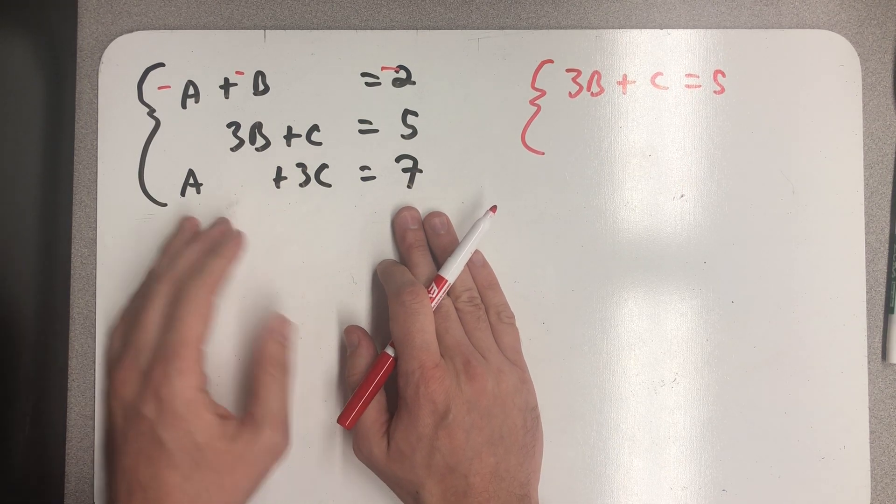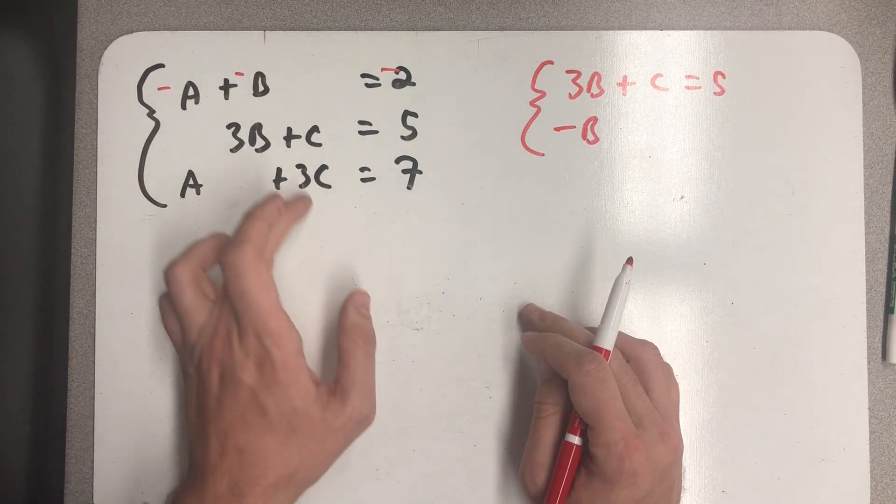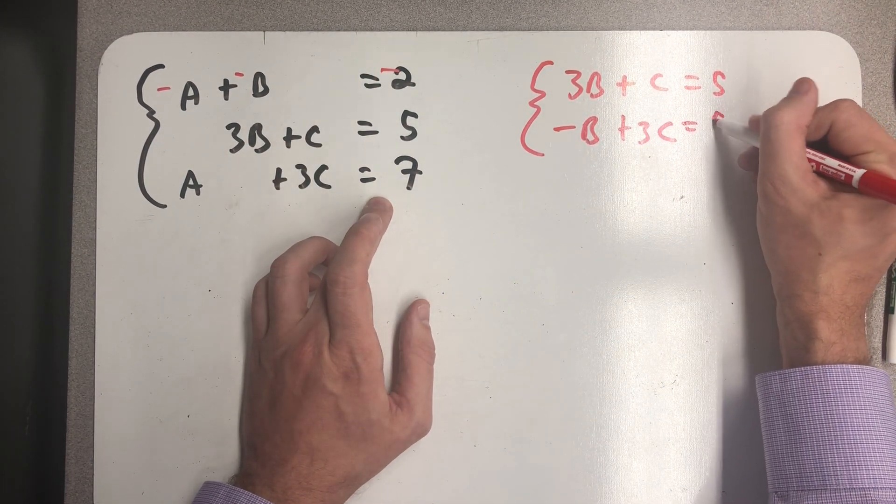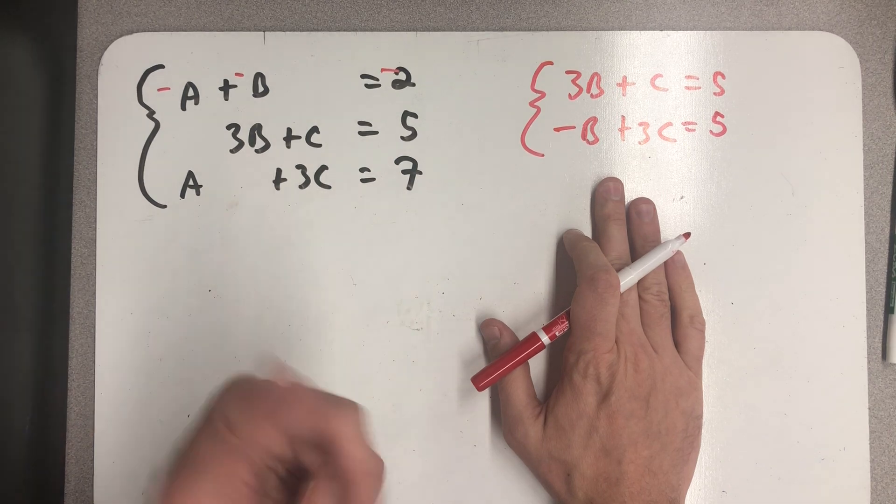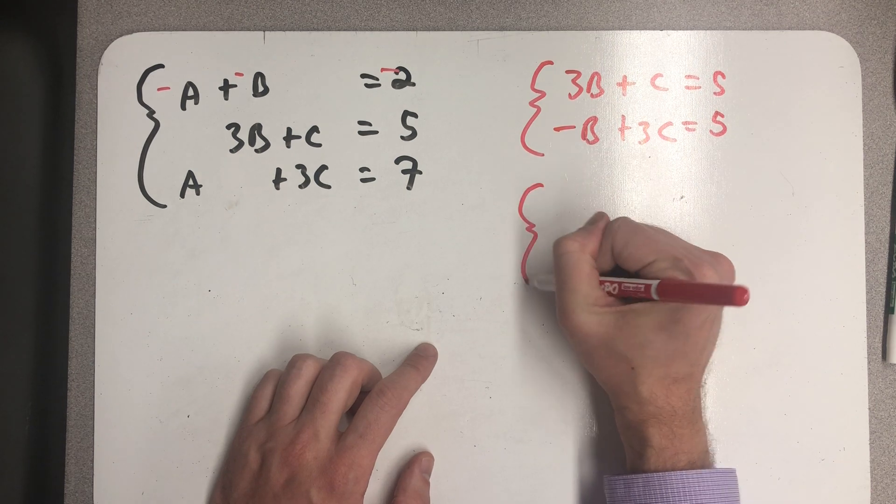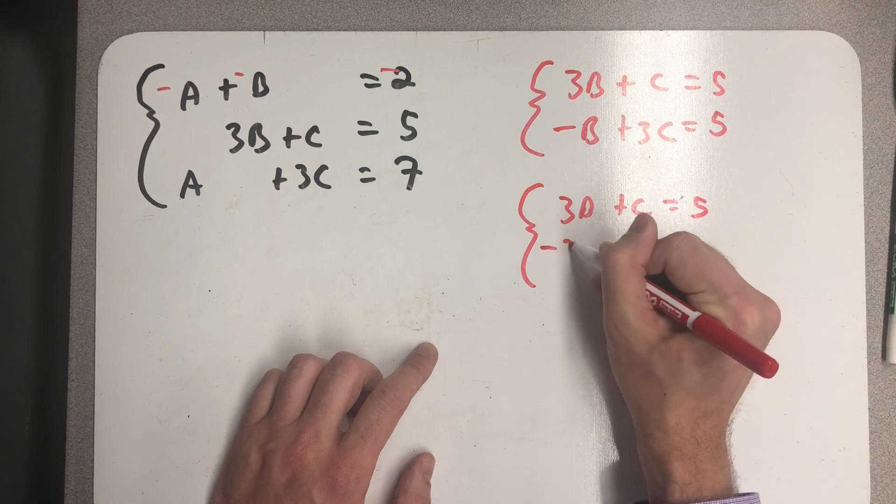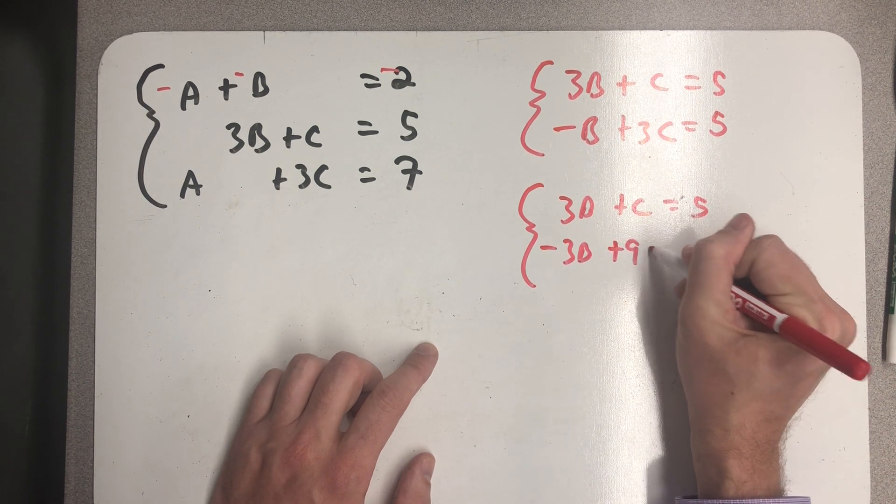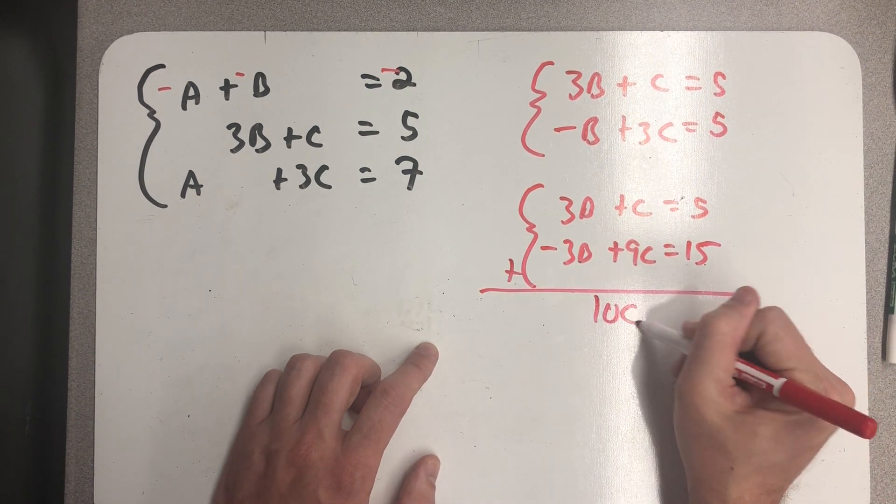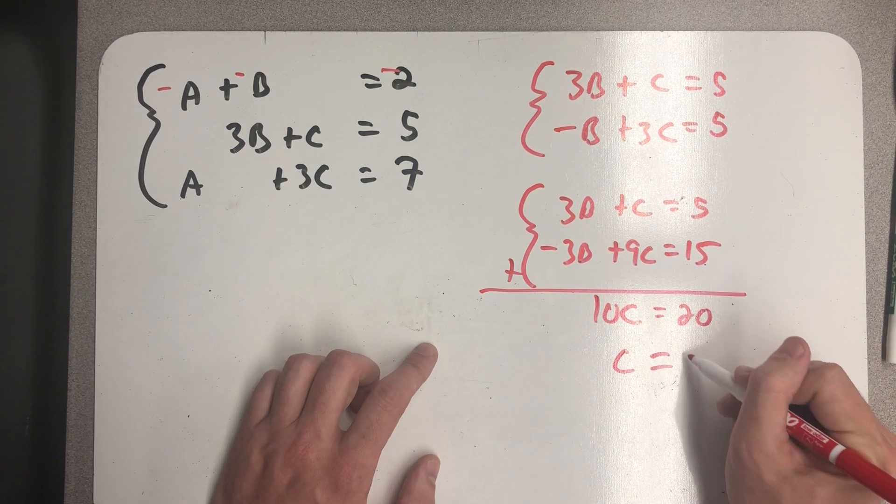So, the a's will cancel. Minus b plus 0 would be minus b, 0 and 3c add together to give me 3c. Minus 2 plus 7 is 5. And so, now I have two equations and two variables. If I multiply this bottom equation by 3, I can continue to use the addition method. Adding these equations, I get 10c is equal to 20. And I find out that c is equal to 2.